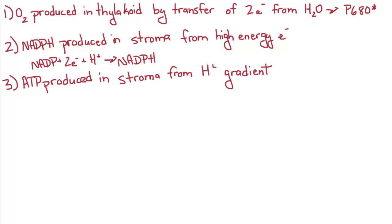NADPH is produced in the stroma from the high-energy electrons being transferred from photosystem II to photosystem I. So you've got your NADP plus two electrons plus a hydrogen ion all come together to form NADPH.